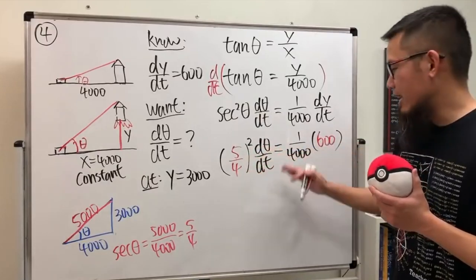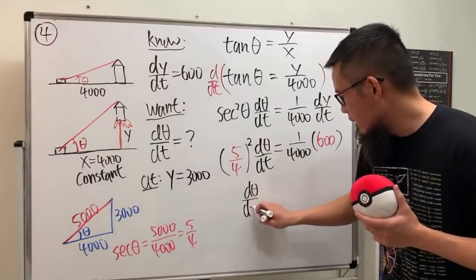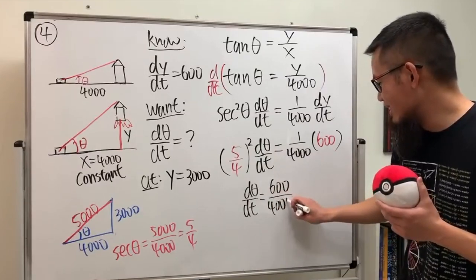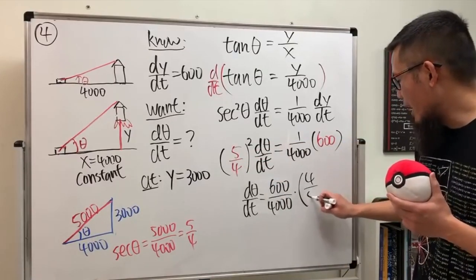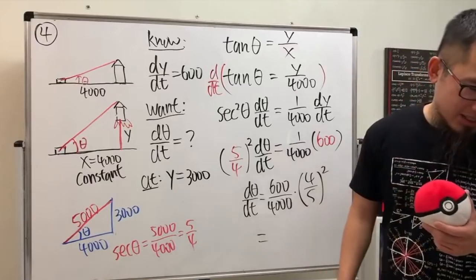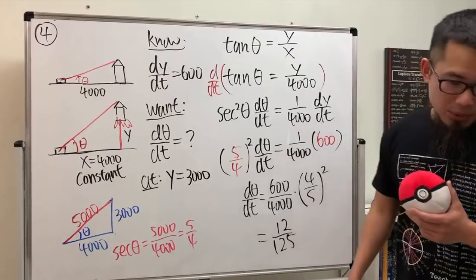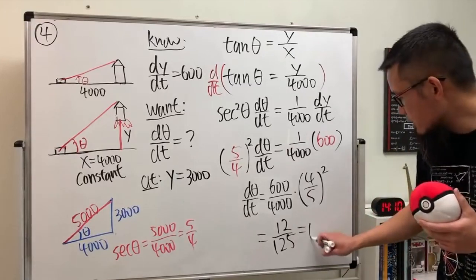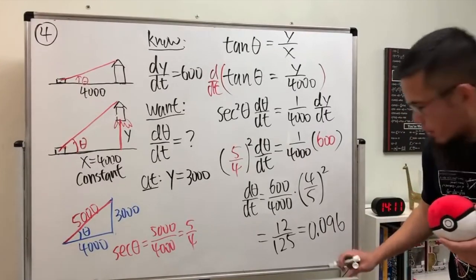Multiplying both sides by the reciprocal (16/25): dθ/dt = (600/4000)(16/25) = 12/125. This is approximately 0.096 radians per second. The unit is radians per second because θ is an angle and this is a rate of change with respect to time.